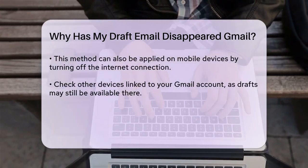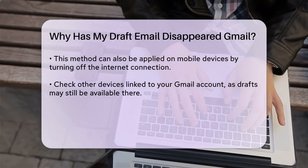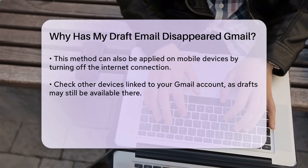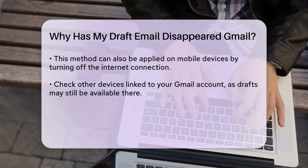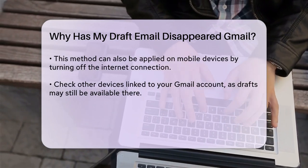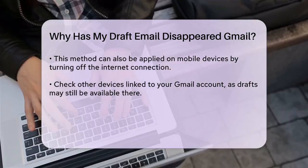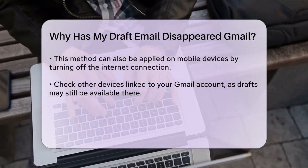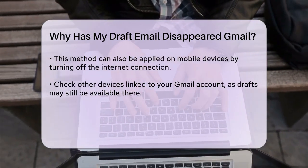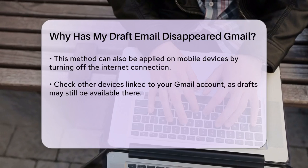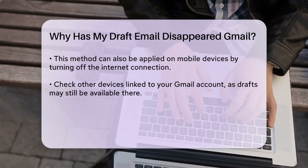If you're using your phone, you can also try this method. Turn off your internet connection on your phone, open the Gmail app, and go to the drafts folder. Since the app can't sync with Gmail's servers without an internet connection, your draft might still be there.